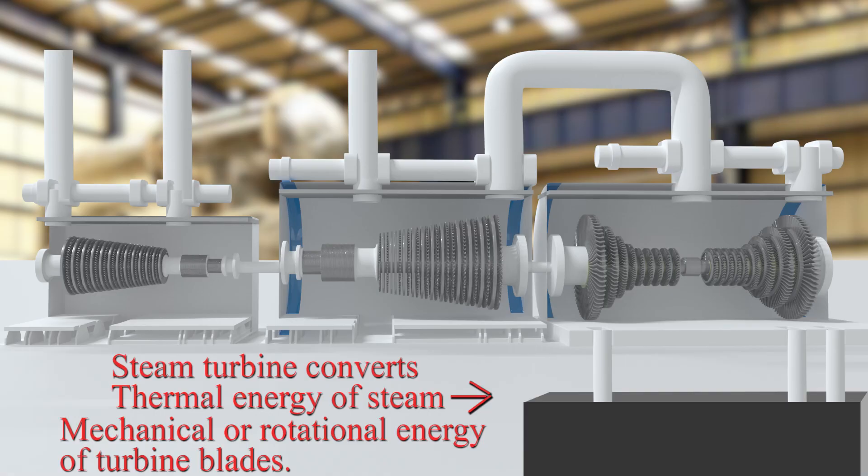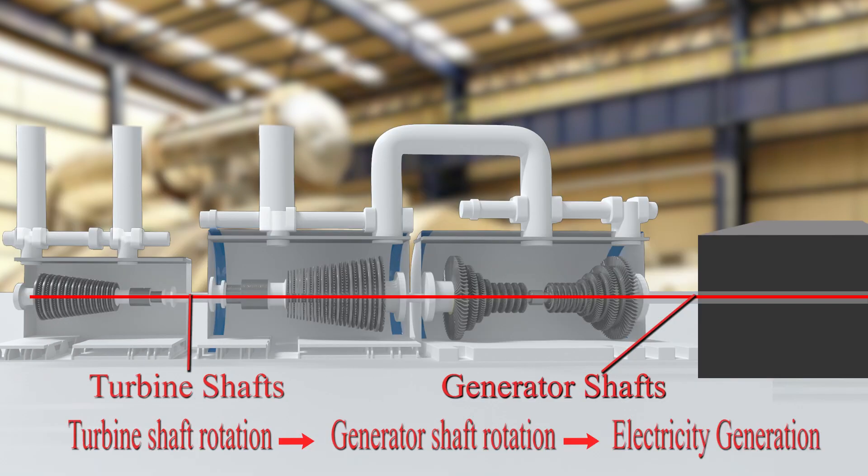As we know, steam turbines are huge machines that extract thermal energy of steam and convert it into mechanical energy. Its impact on turbine blades causes rotation of the turbine shaft, on which the blades are mounted. The shafts of the turbine and generator are coupled together, so rotation of the turbine causes rotation of the generator rotor as well, producing electricity.